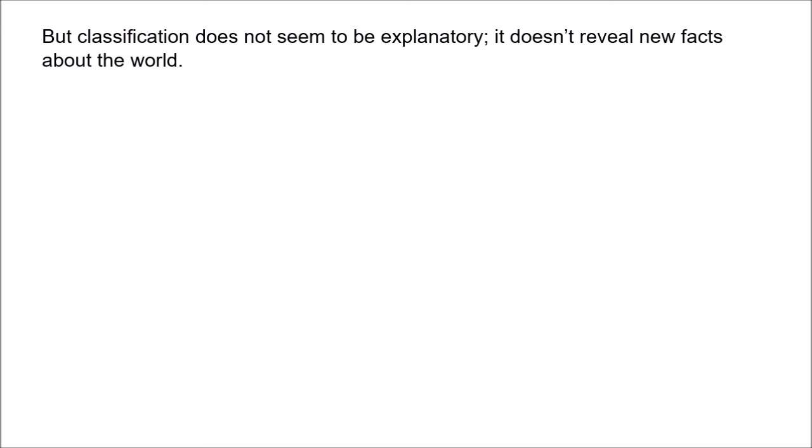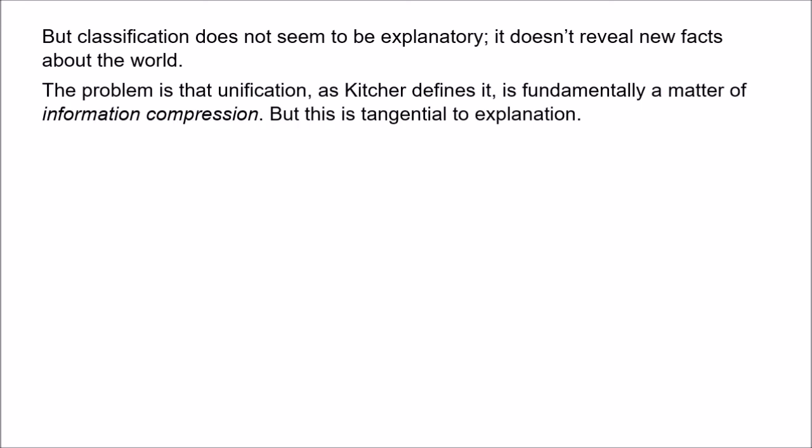The fundamental problem here, as noted by James Woodward in the Stanford Encyclopedia article on scientific explanation, is that Kitcher's conception of unification is really a matter of what Woodward calls information compression. The guiding idea behind Kitcher's model is to derive as many phenomena as possible from the fewest argument patterns — but that is really just a matter of conceptual economy, finding ways of simplifying our theories so we can express more of what we know with fewer principles. And that's totally tangential to explanation. Explanation is in the business of telling us how the world works and giving us understanding of phenomena.